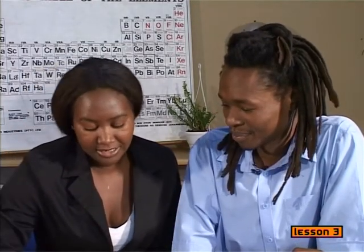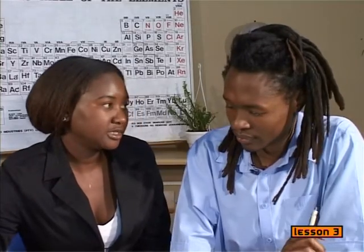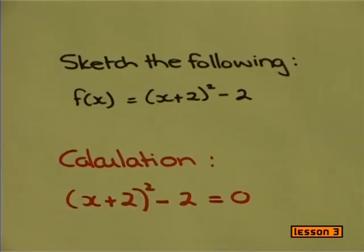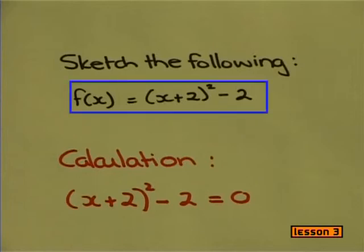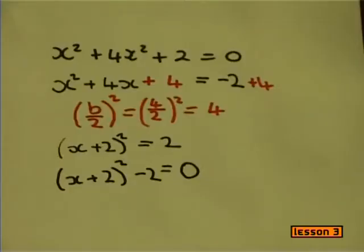Have a look at this answer and the question in your worksheet. What do you notice? Oh, I see — except for the f of x, the two equations are the same. So that must mean the quadratic is written in the form of a completed square. So I have seen equations like this before. That's right. Although the form is a bit different from what we're used to, it is in fact a quadratic equation. It's important to note that we haven't changed the original equation, just rearranged it.